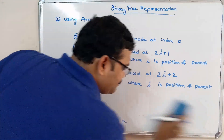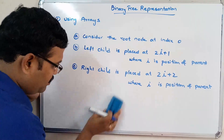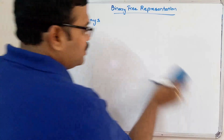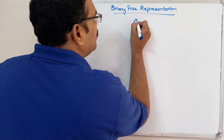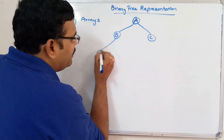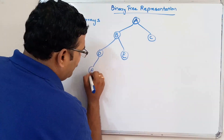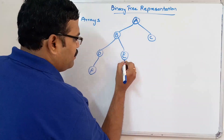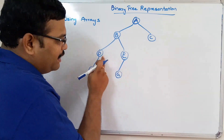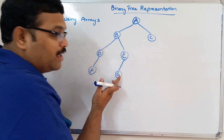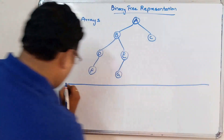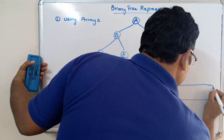Let us take another example with nodes A, B, C, D, E, F, and G. Here A has two children B and C. B has two children D and E. D has only one child, a left child F. E also has only one child, a left child G. Let us represent this tree using a single dimensional array.